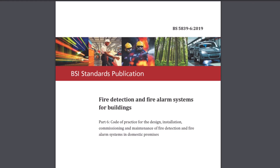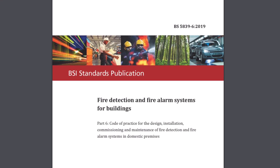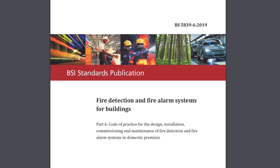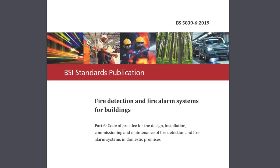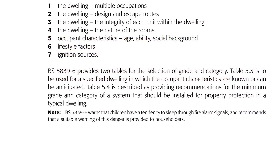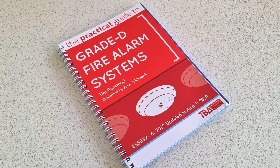This is the code of practice for the design, installation, commissioning and maintenance of fire detection and fire alarm systems in domestic premises. This table gives us the minimum required standards for grades and categories of properties where the occupant characteristics are known or can be anticipated. However, these are the baselines to work from.